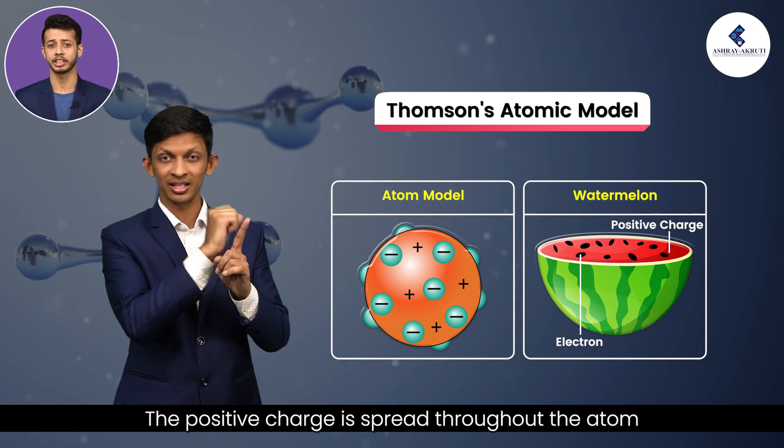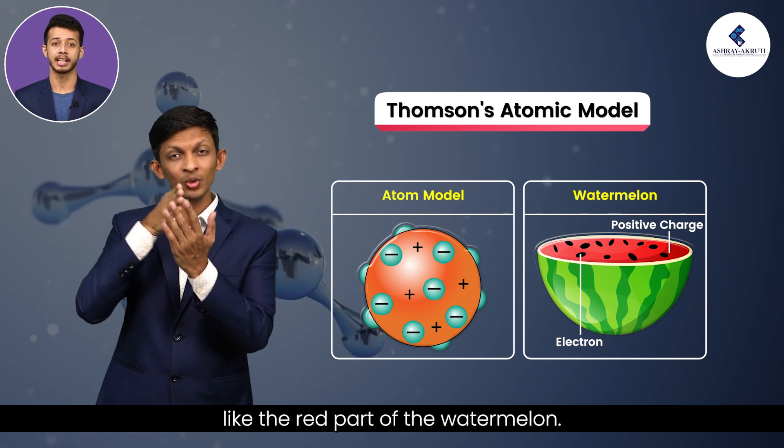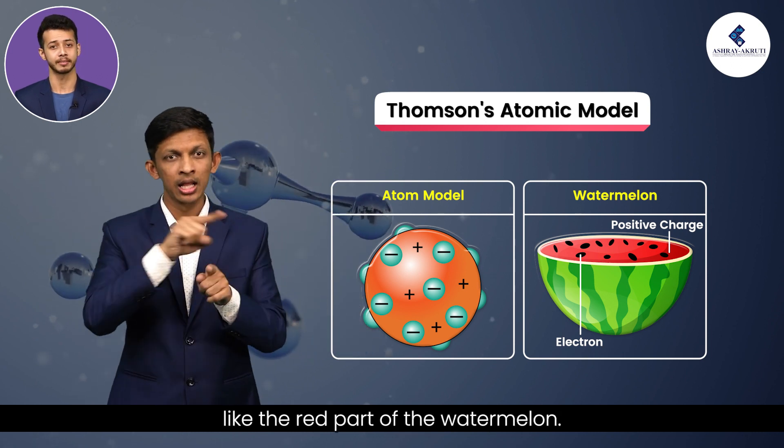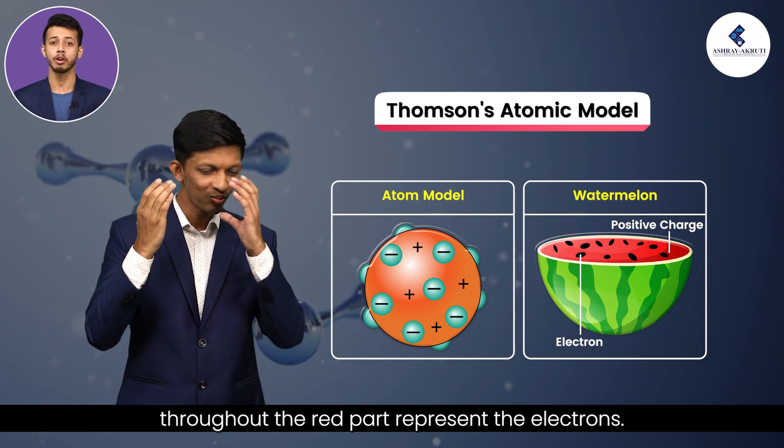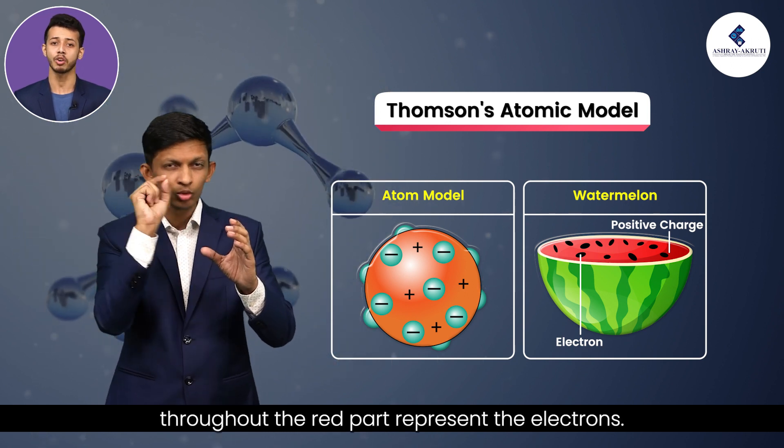The positive charge is spread throughout the atom like the red part of the watermelon. The black seeds distributed throughout the red part represents the electrons.